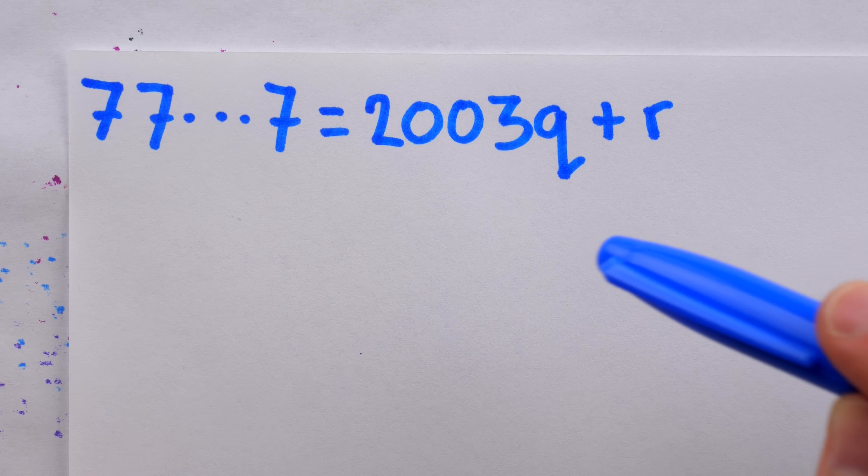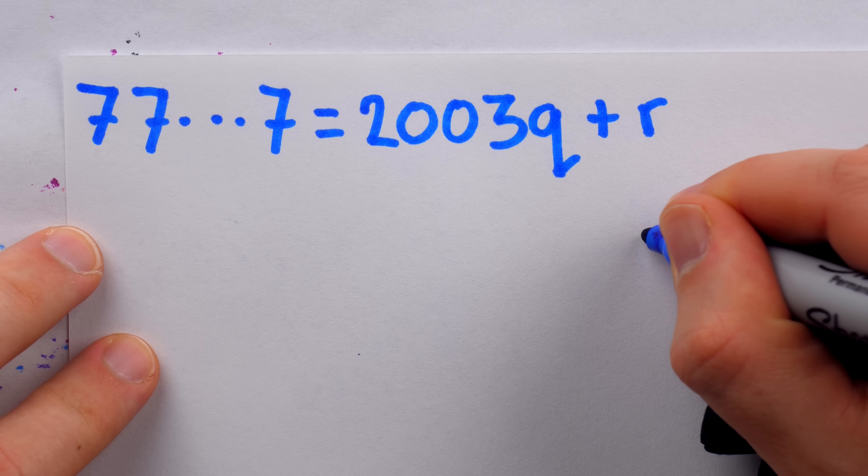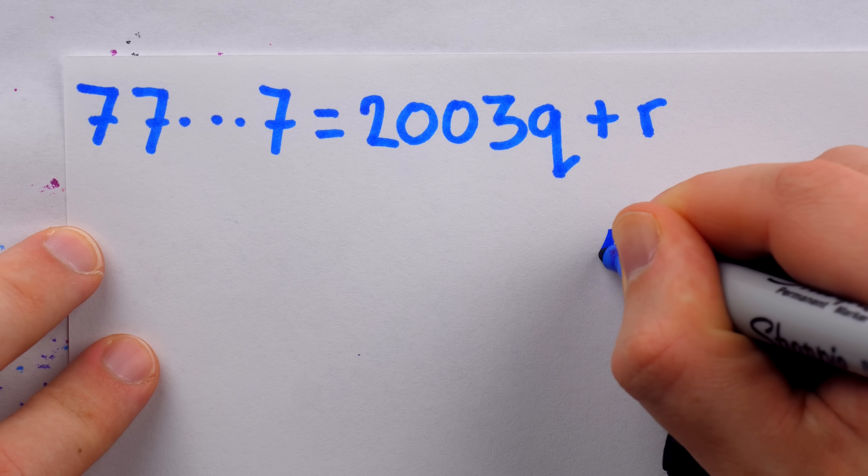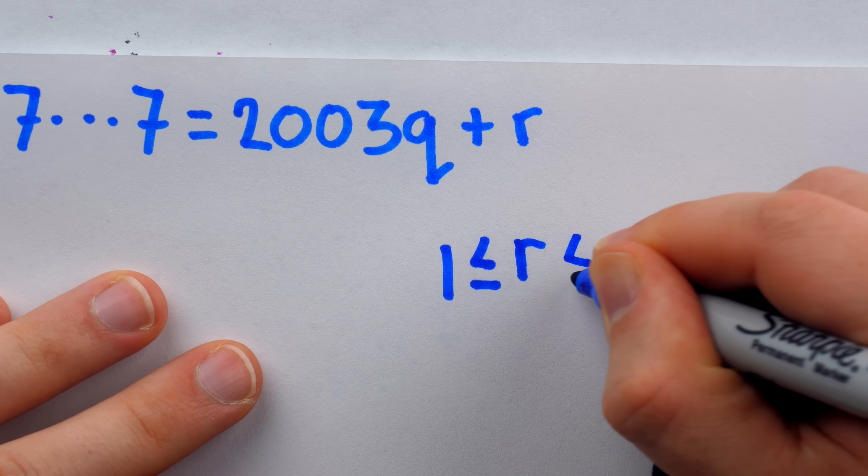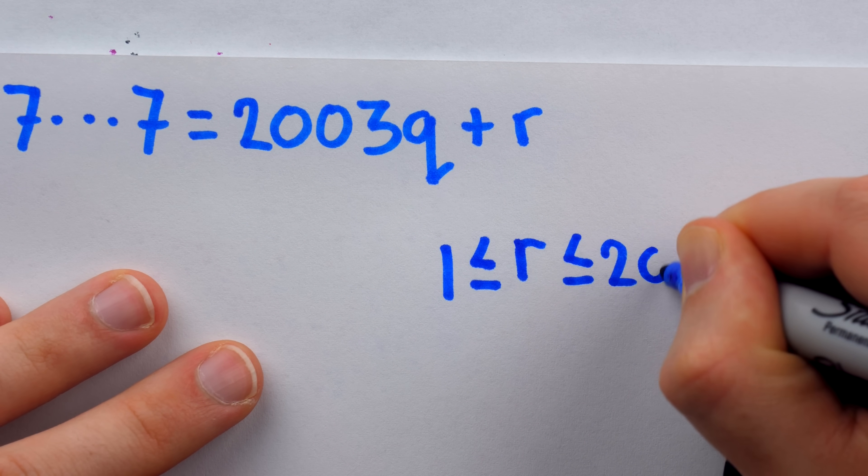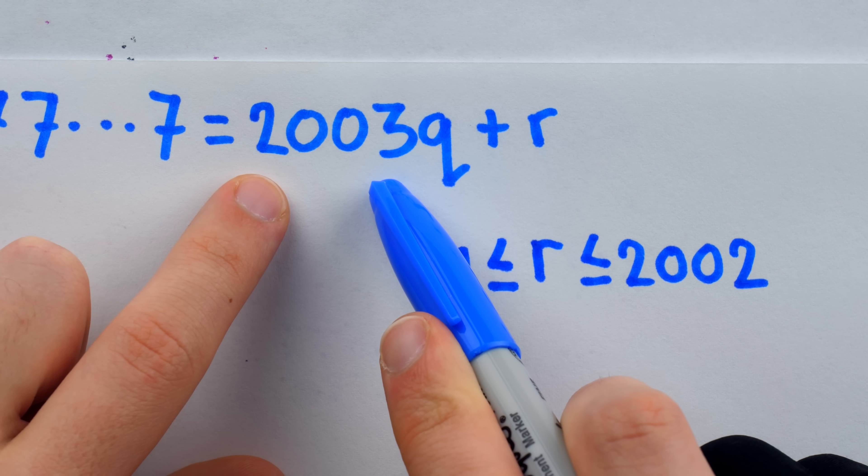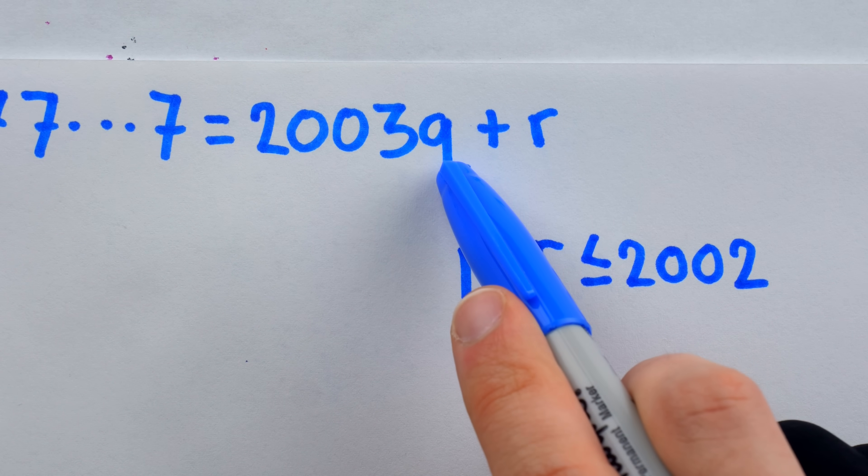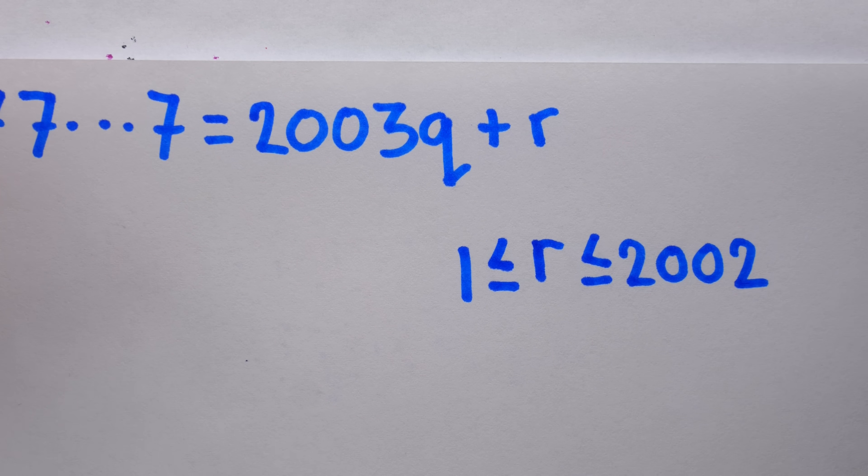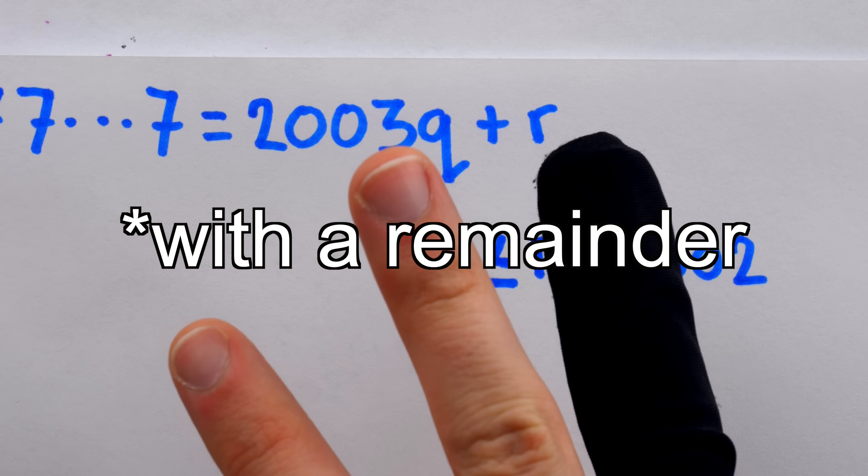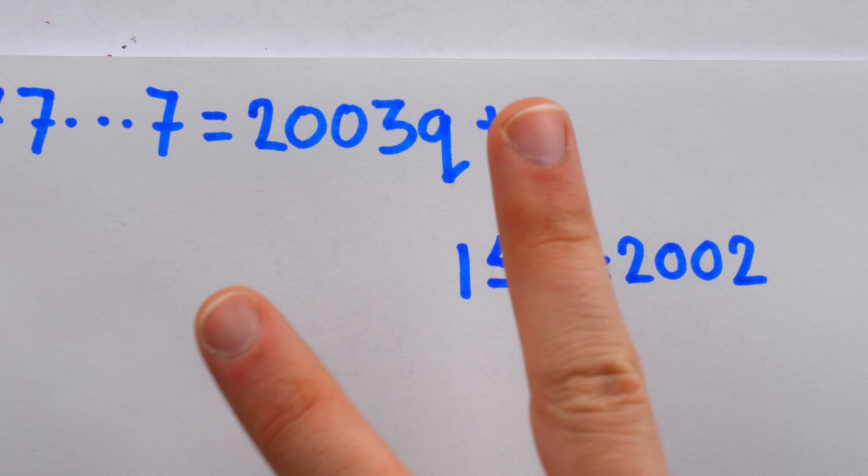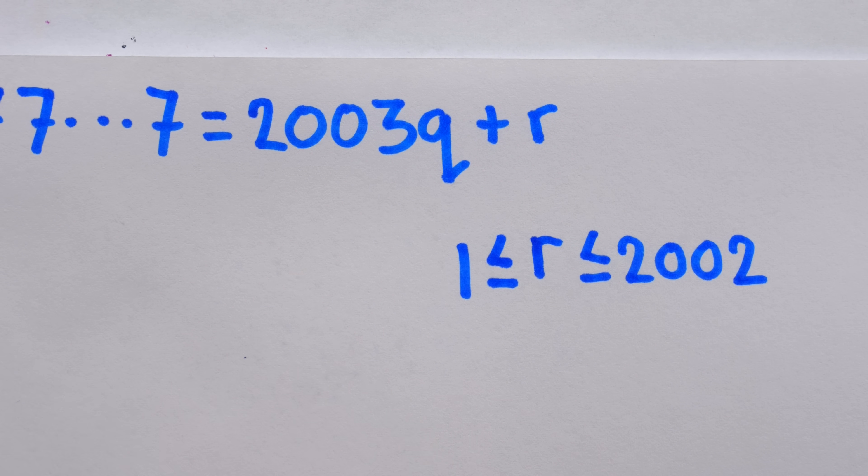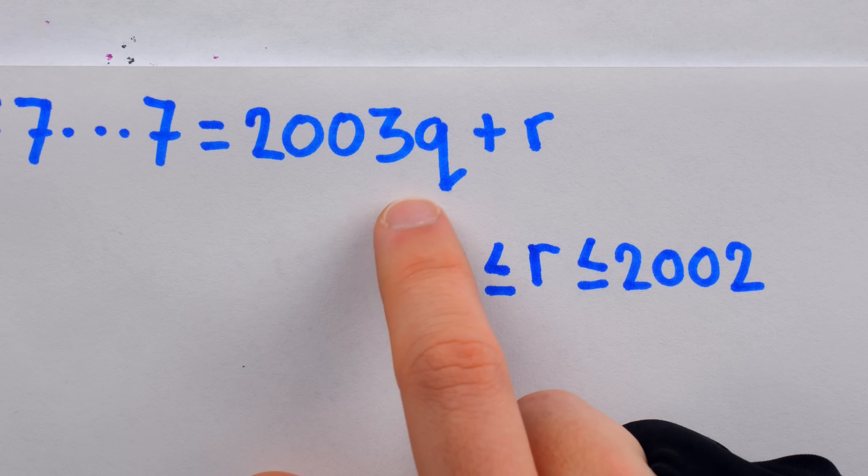So then let's suppose the remainder isn't 0. Then, for every term in this sequence, the remainder has to be at least 1. And the biggest the remainder could be is 2002. It can't be 2003 or bigger, because that means we could have increased Q. For example, 5 divided by 2 isn't 1 with a quotient of 3, because 3 has another copy of 2 in it. 5 divided by 2 would give us 2 with a remainder of 1. The remainder has to be less than the divisor.